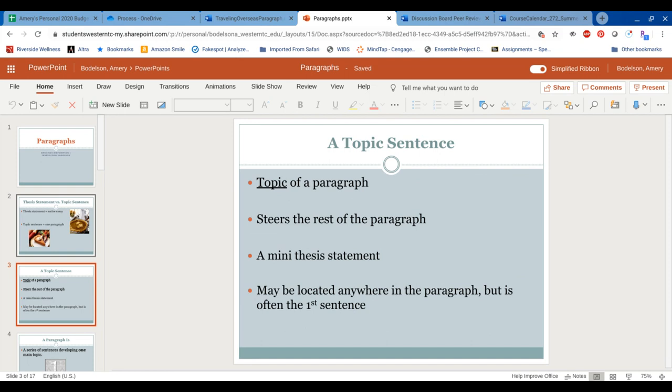The topic sentence of a paragraph contains the topic of the sentence. So if I go back to that thesis example of budgeting in college, my first main point might be about saving money. And so my topic sentence would need to focus primarily on how to save money. I wouldn't then go into getting a job or spending wisely. I'd go into saving. And it steers the rest of the paragraph, but they all relate back to that overall thesis.